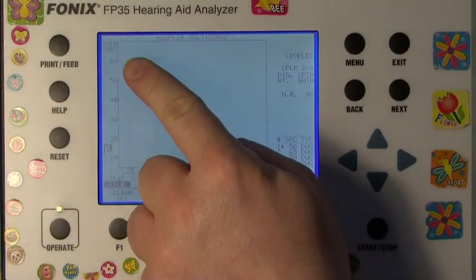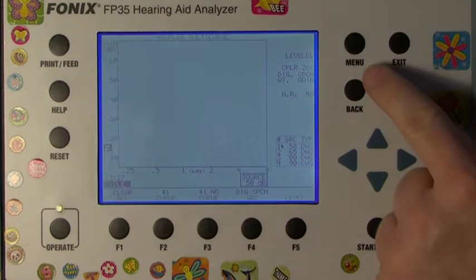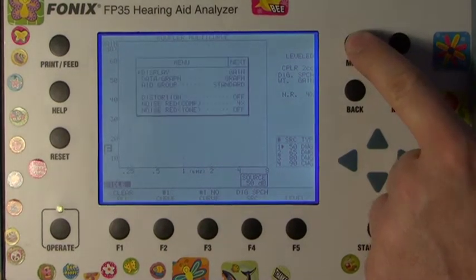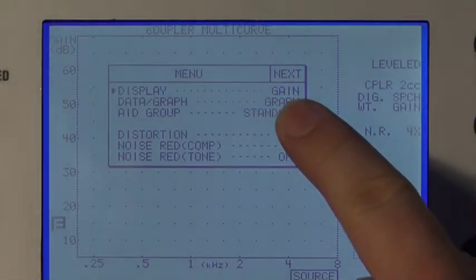On the screen in the top left it should read SPL for sound pressure level. To change this, press the menu button. A small menu on the screen will be displayed, and on the menu display is Gain.